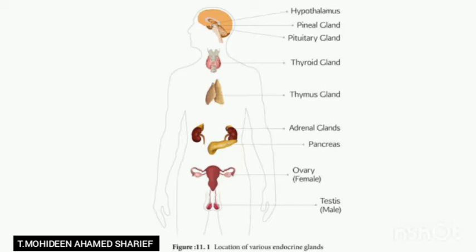In the picture you can see the endocrine glands and their locations. First is the hypothalamus; the pineal gland and pituitary gland are located in the brain. Next, in the thoracic region, is the thyroid gland; below that is the thymus gland. In the kidney area is the adrenal gland, and near that is the pancreas. The ovary is seen in females and the testes in males.